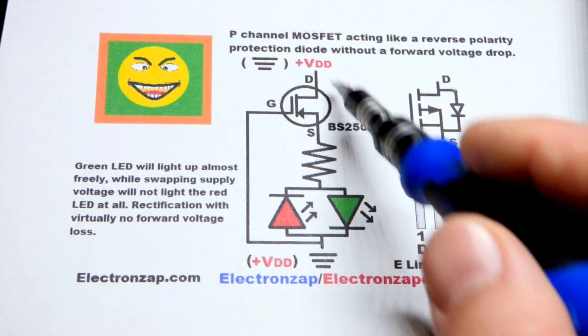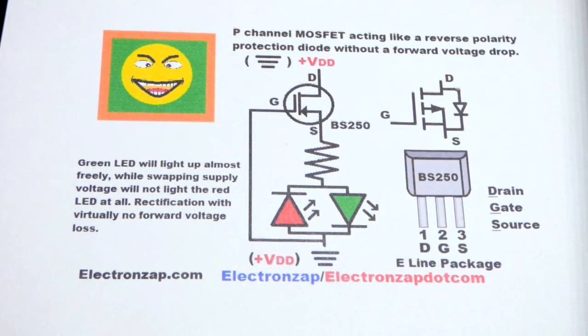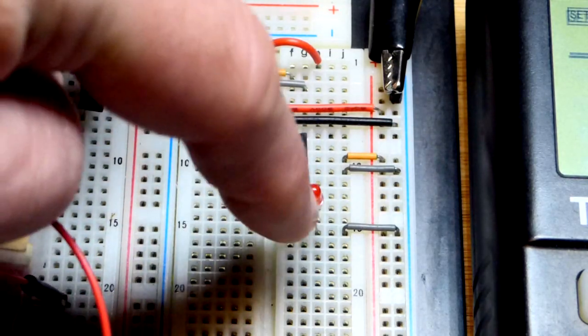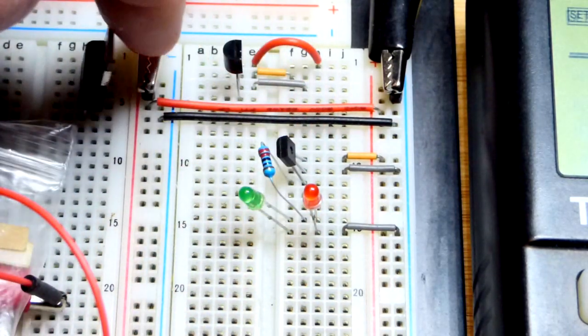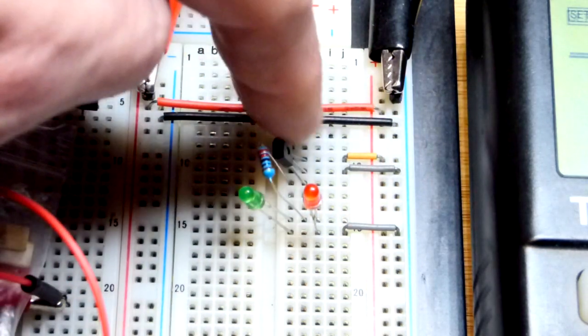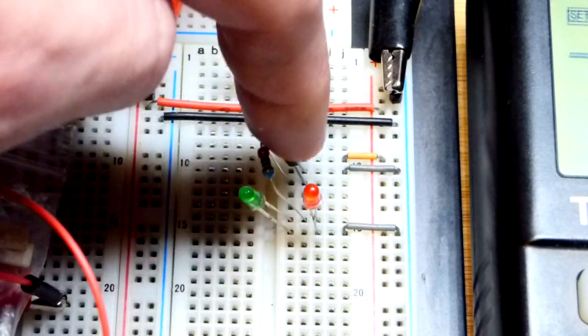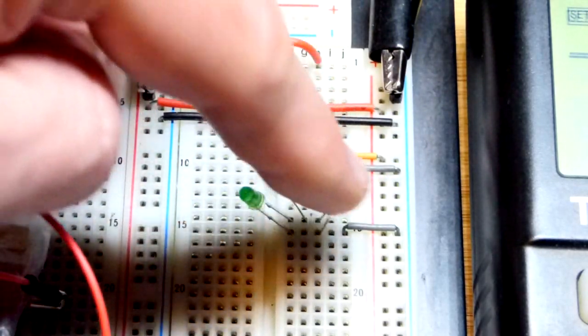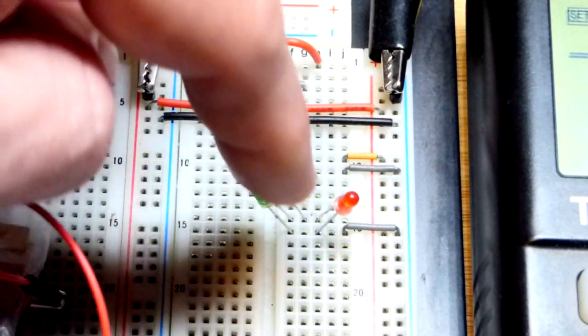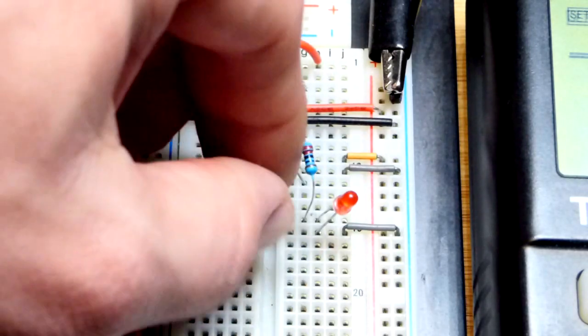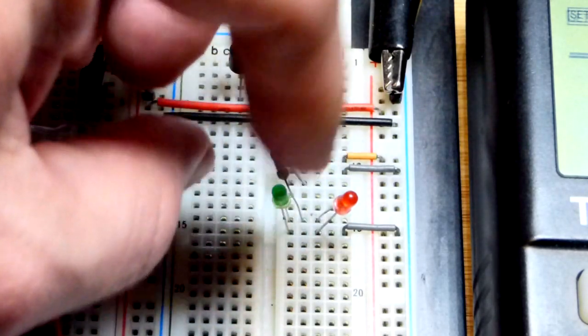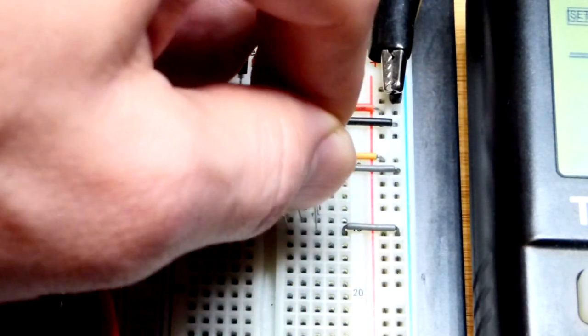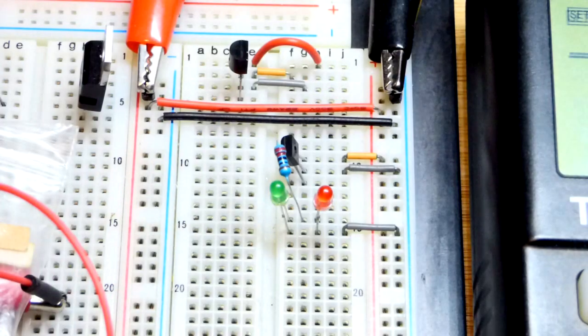Now here we are on the breadboard. Because the green LED is blinding when it is on, the power supply is off. We got positive there to the drain, here is the back of the transistor. We got the gate to the negative supply and the source right there to the 220 ohm resistor coming to the LEDs. Long lead the anode to the resistor there, short lead cathode down, and the opposite with the red LED.